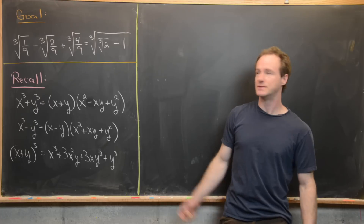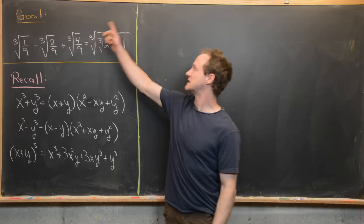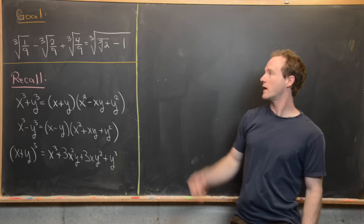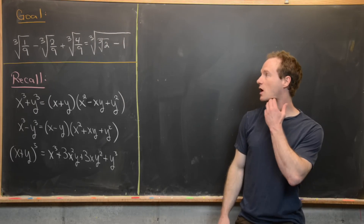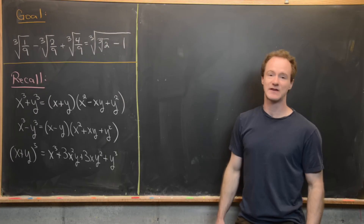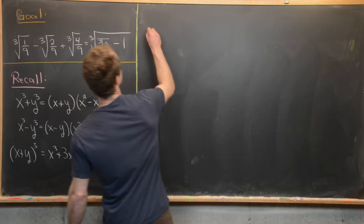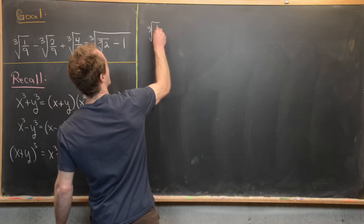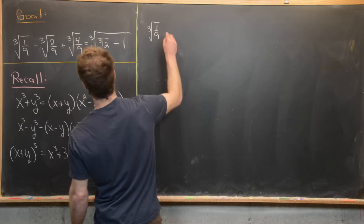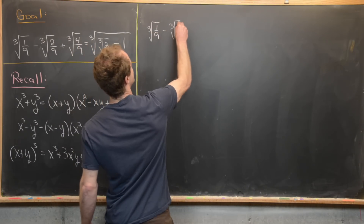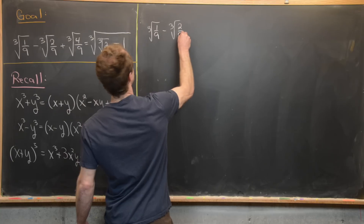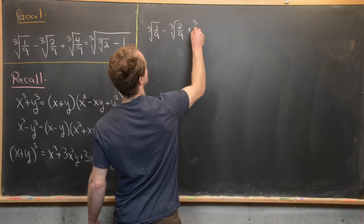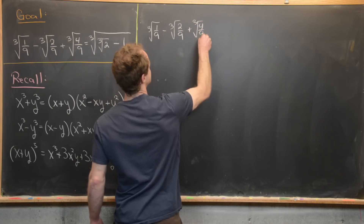The first one is going to be denesting cube roots. Starting on the left hand side of the equation: the cube root of 1/9 minus the cube root of 2/9 plus the cube root of 4/9.